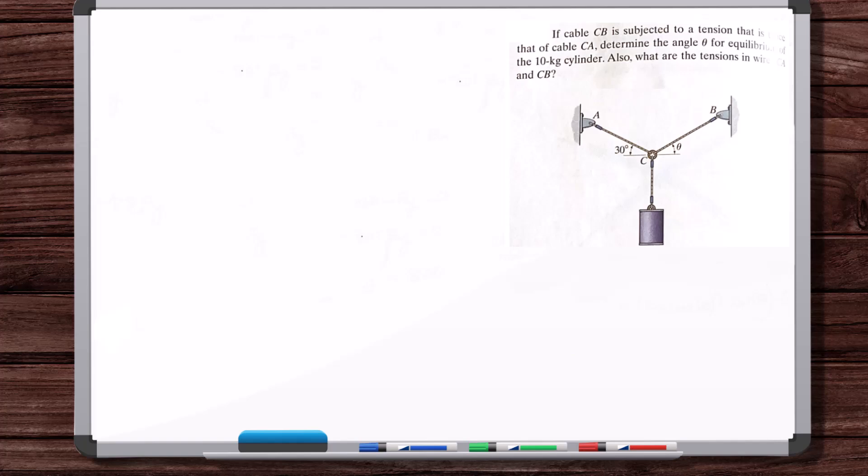All right, in this video we're going to work a statics problem that falls under the category of the equilibrium of a particle. What this means is that any free body diagram that we draw, all of the forces on that object are concurrent. They meet at a point, which means that you can model any free body diagram that we draw just as a point, as a particle.